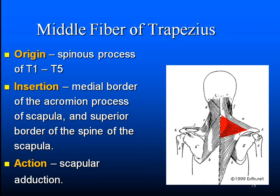The levator scapulae, contracting, elevates the scapula. Both the upper trapezius and levator scapulae are required for complete shoulder shrugging — simultaneous elevation of the scapula. The main action of the levator scapulae is scapular elevation and downward rotation of the scapula. It is supplied by the dorsal scapular nerve and branches of the cervical spine. The rhomboids major and minor are both retractors and downward rotators of the scapula, and also play an important role in stabilization of the pectoral girdle.